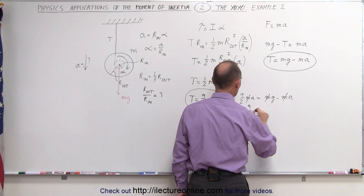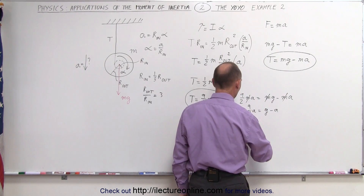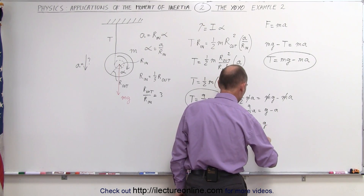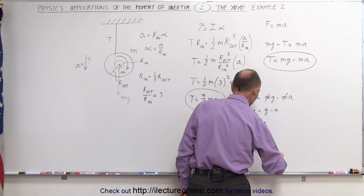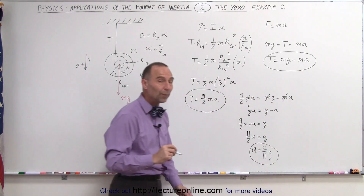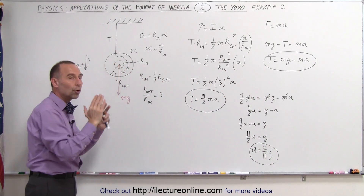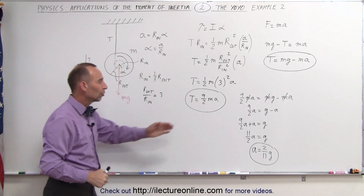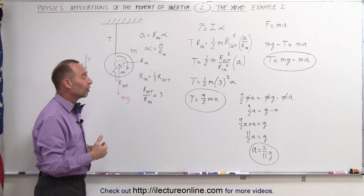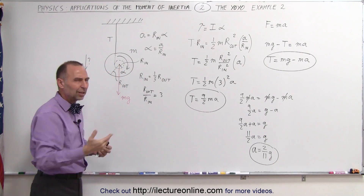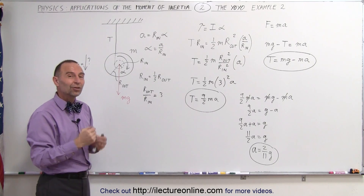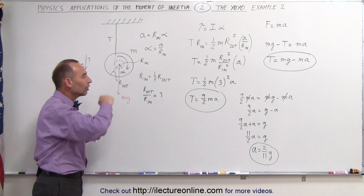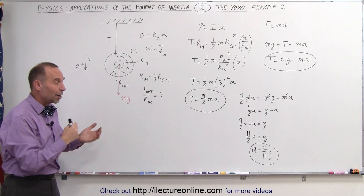After canceling m, we get nine-halves times a equals g minus a. Moving the minus a to the other side: nine-halves a plus a equals g, which gives eleven-halves a equals g, or a equals 2/11 g. This is a much smaller acceleration, and depending on the radius ratio, the smaller the inner disc the slower the acceleration. When the inner disc equals the outer disc, we get a equals two-thirds g. That's why yo-yos accelerate so slowly downward — the string winds on the small inner disc — and that's how we calculate it.